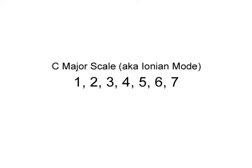This scale has a root, a major second, a major third, a perfect fourth, a perfect fifth, a major sixth, and a major seventh. That means a starting note, a note that's two half steps above that starting note, four half steps above that starting note, five half steps above the starting note, seven half steps above the starting note, nine half steps above the starting note, and finally eleven half steps above the starting note.